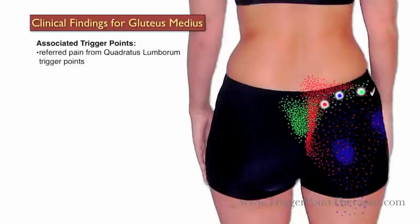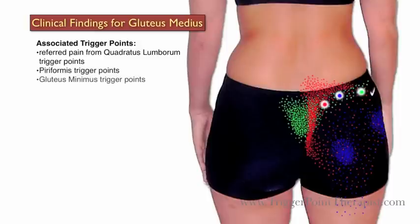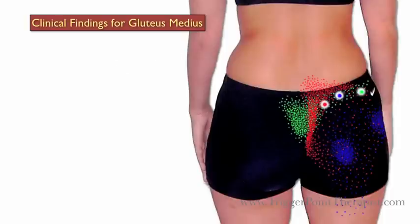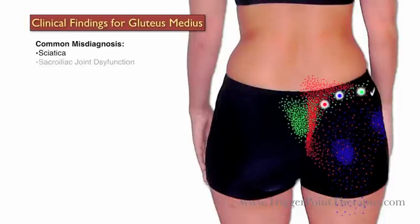The referred pain from active trigger points in the quadratus lumborum muscle will frequently activate gluteus medius trigger points. Piriformis and gluteus minimus trigger points are functionally related to the gluteus medius trigger points. Clients with active trigger points in the glute medius are commonly misdiagnosed with sciatica, SI joint dysfunction, and trochanteric bursitis.